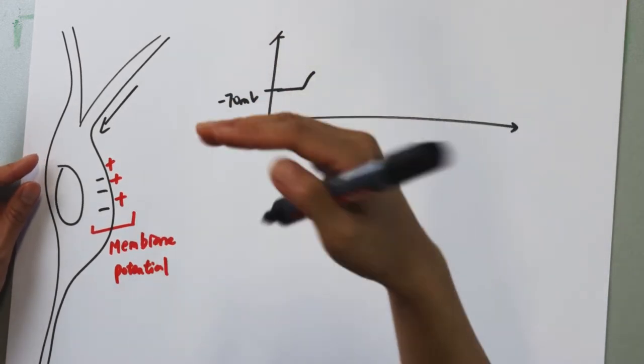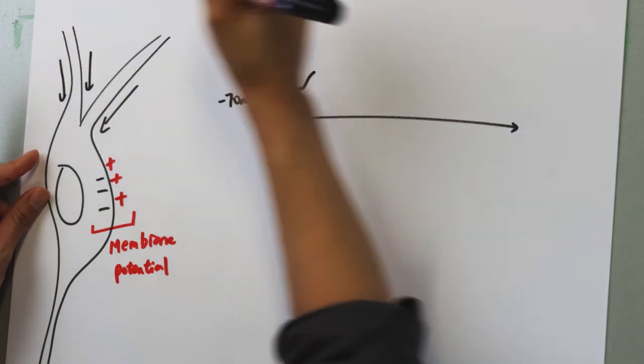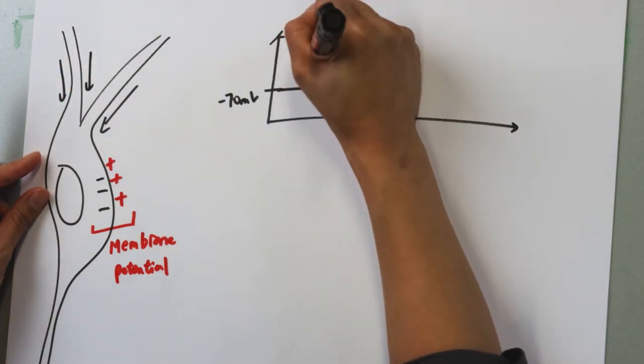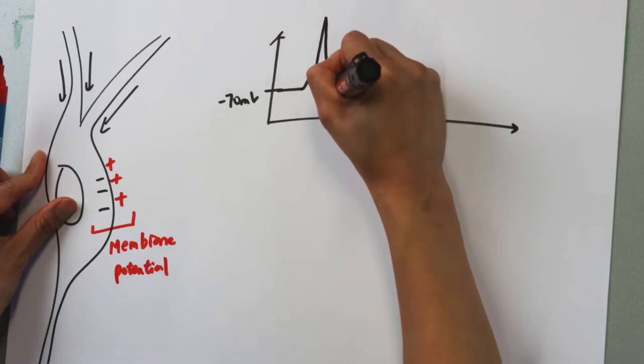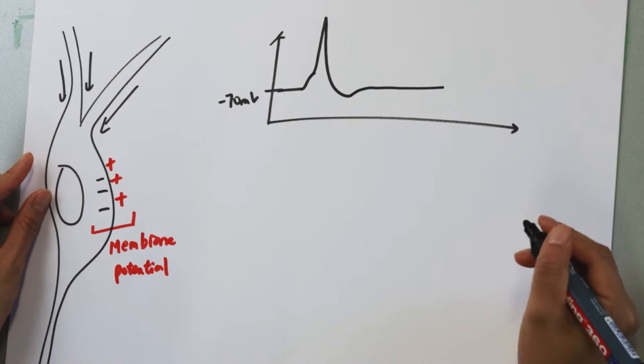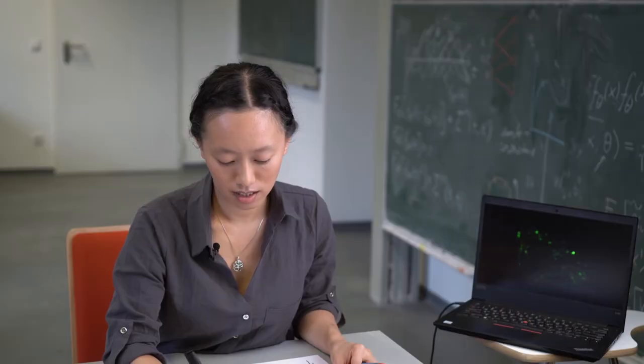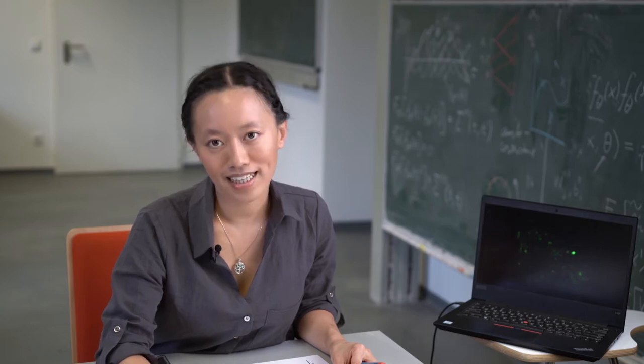When more inputs arrive and cross through a certain threshold, this membrane potential sharply increases and drops down back to the resting potential. This peak we call a spike or an action potential.